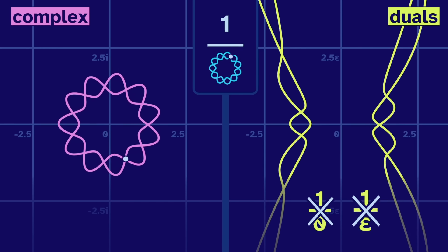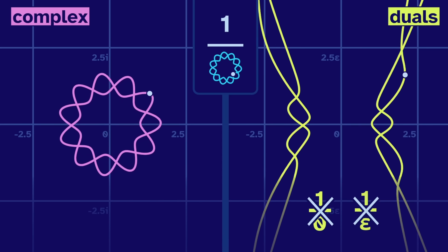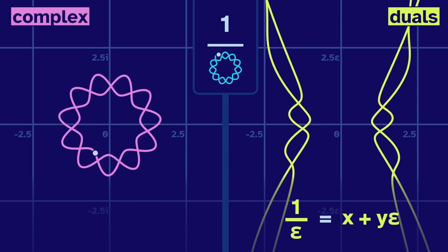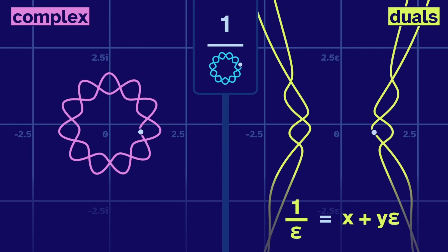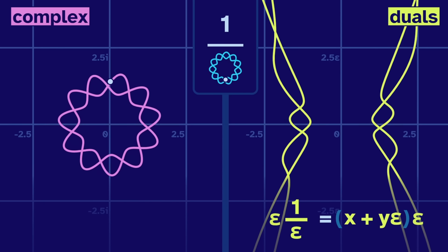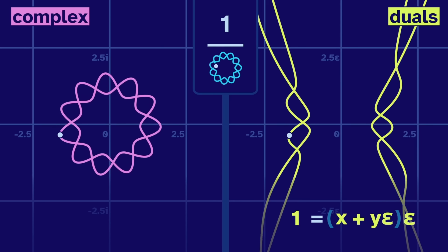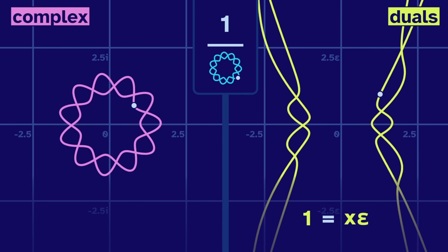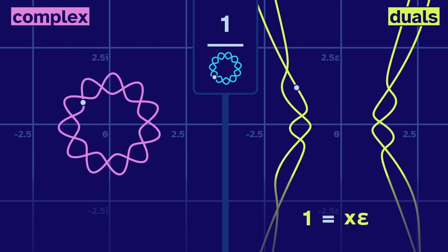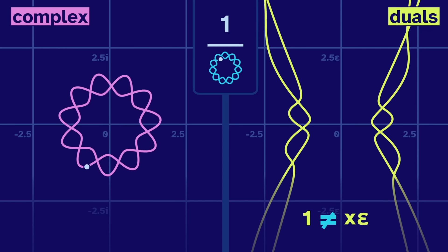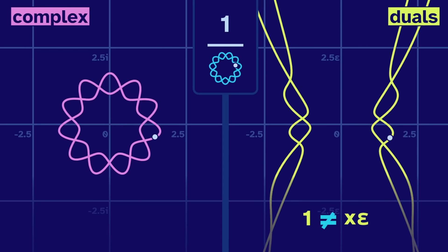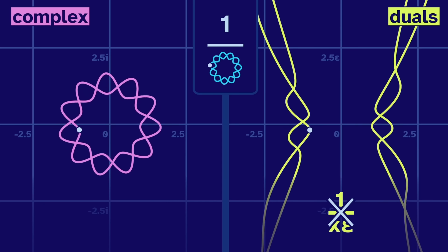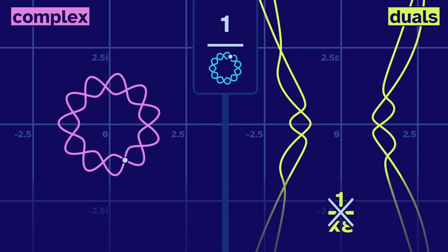We also can't divide by epsilon. Why not? Well, let's try. We'll say that one over epsilon is some dual number. But then, if we multiply by epsilon, the left side should cancel to one. On the right, that epsilon squared zeroes out, and we're left with a multiple of epsilon. But one is not a multiple of epsilon, so this fails. We could expand this argument to show that we can't divide by any multiple of epsilon. The entire meridian is off limits.